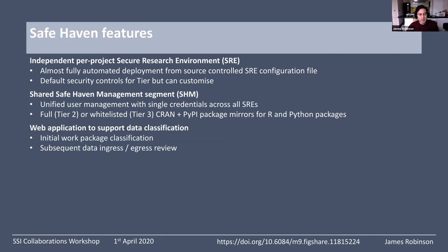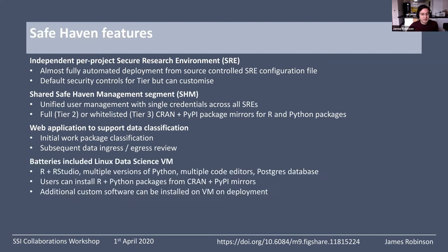There's also a web application to support the data classification. This walks the data provider representative and the investigator through the classification process to decide what category a work package falls into. It's also needed every time you want to bring data into or out of the environment. Finally, the batteries-included Linux VM has R and RStudio, different versions of Python, different editors, a Postgres database, and various things we think are useful. We're happy to add new things as people request them.